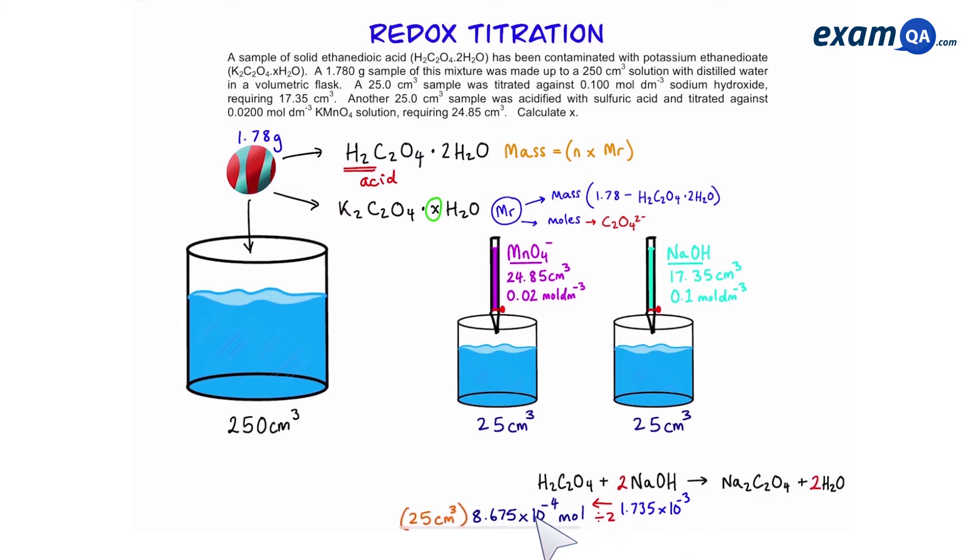But remember this is only in the 25 cm3 sample. In the original sample which has a volume of 250 we have to times it by 10. So this gives us a final answer of 8.675 times 10 to the power of minus 3 and this is the moles of the ethane dioic acid alone in the mixture. Now we're going to times it by the MR. The MR of the whole thing including the two molecules of water is 126. Moles times MR should give us the final mass. 1.09305 grams.